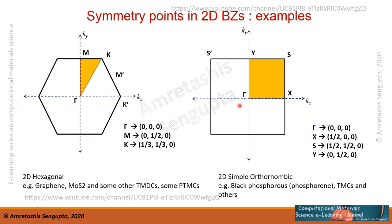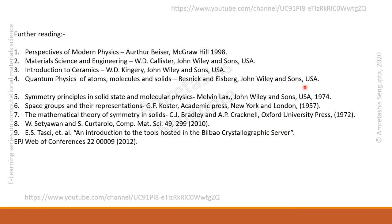For the 2D simple orthorhombic case like black phosphorus, the high-symmetry points are: Gamma (Γ) at (0, 0, 0), X at (0.5, 0, 0), S at (0.5, 0.5, 0), and Y at (0, 0.5, 0). These are written in fractional coordinates — for example, 0.5. S and S-prime are equivalent in the ideal situation. Note that sometimes this S point is referred to as M, but that notation is for cubic systems where a and b are equal, not for orthorhombic.